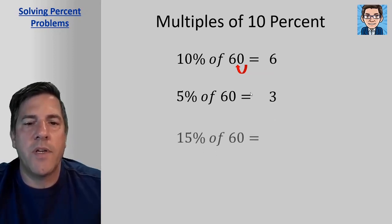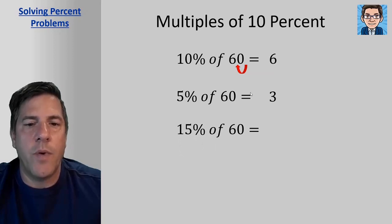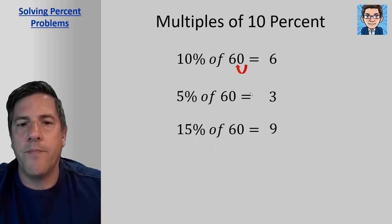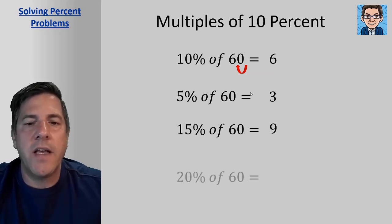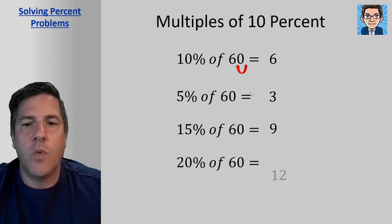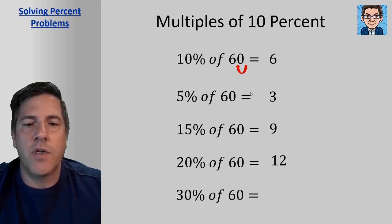If we did 10% and 5%, we would get 15% or 9. Just add the 6 and 3 and get 9. If 10% is 6, then 20% is going to be 12, we just double it. And if 10% is 6, then we can triple it to get 30% or 18. So if you have multiples of 10%, they're pretty easy to work with. Just figure out what 10% is first and then take multiples from there.